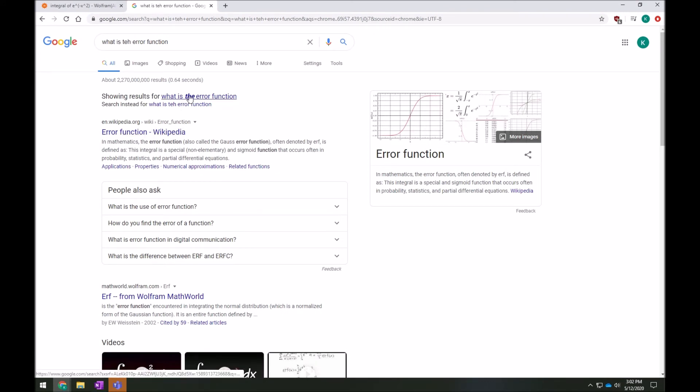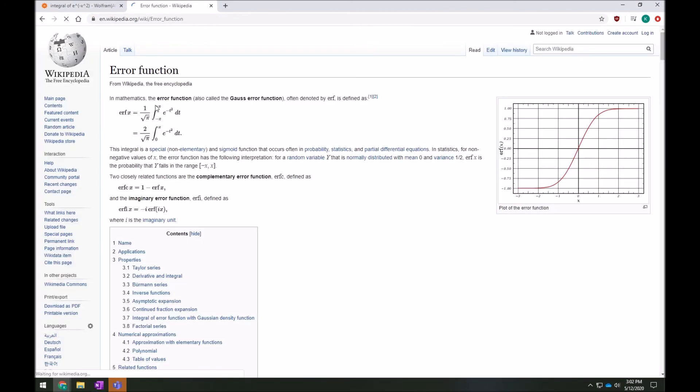Okay, error function. Wikipedia. Okay, let's check that out. In mathematics, the error function, also called the Gauss error function, often denoted erf, is defined as, oh gosh, 1 over root pi integral from what? Negative infinity to infinity? What does that even mean? e to the, oh no. Okay, this is getting really messy and really weird.